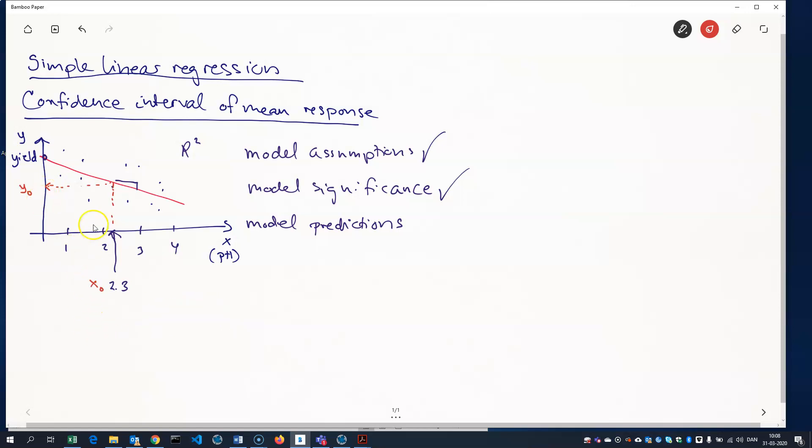We'd like to give an interval and say, well, this is the interval that our model predicts the yield to be in with, say, 95% confidence.